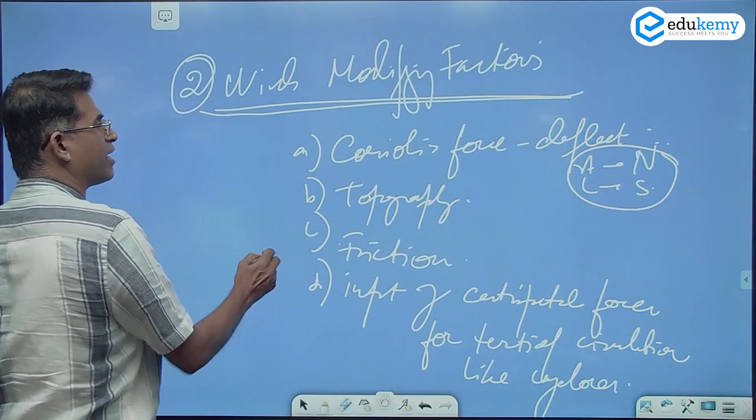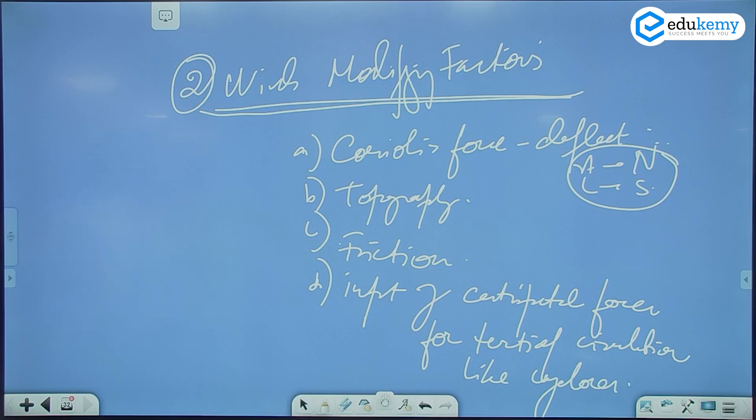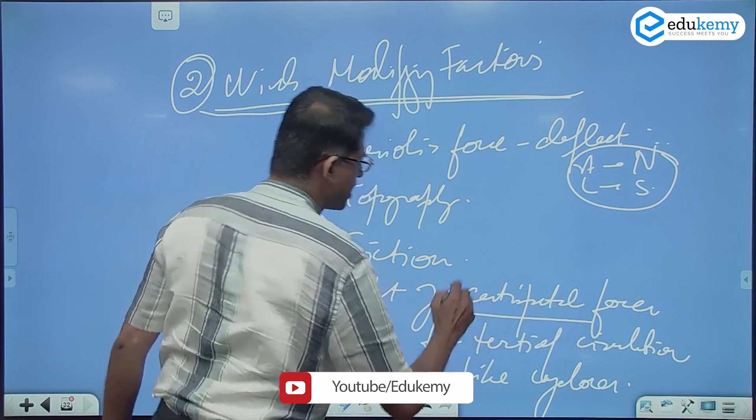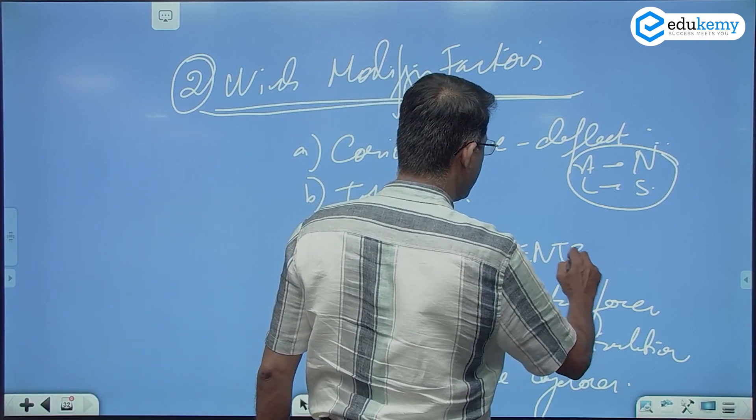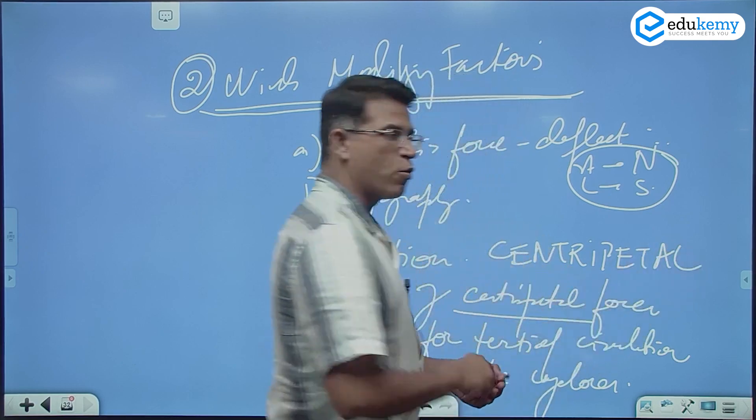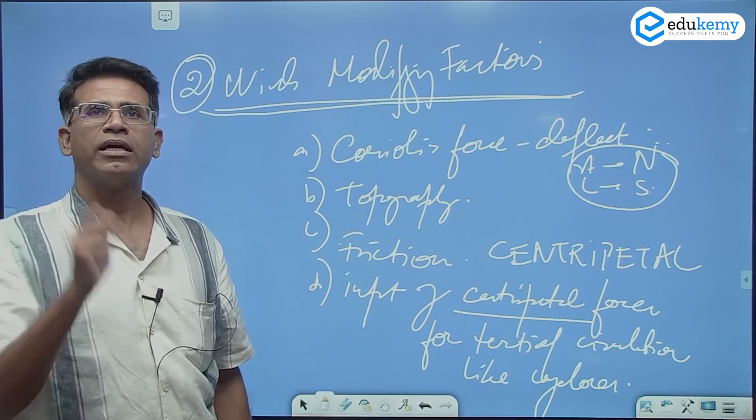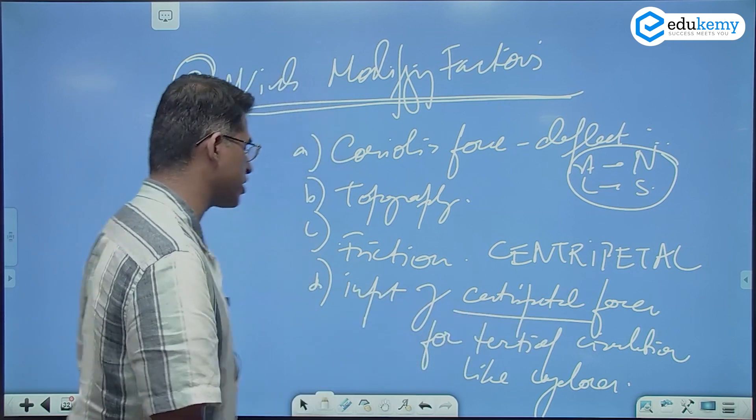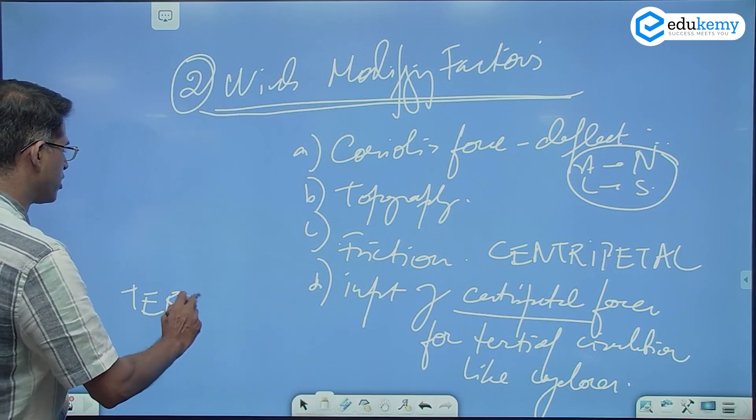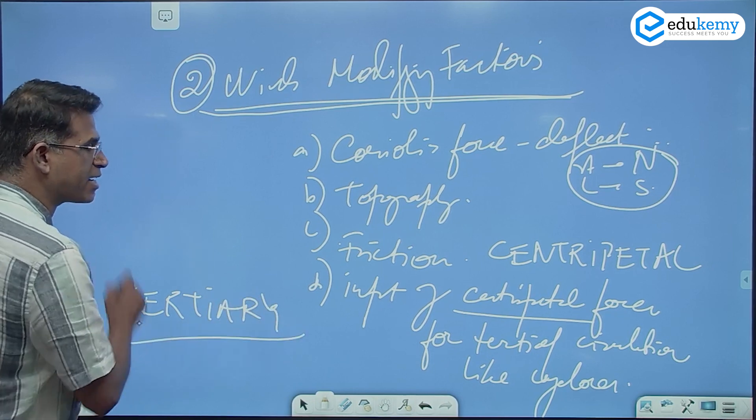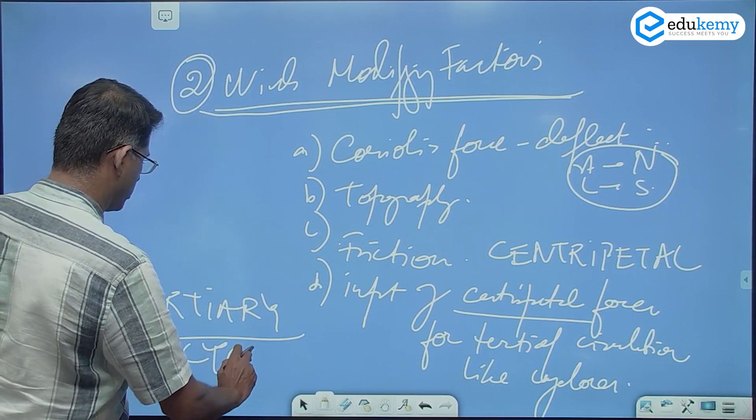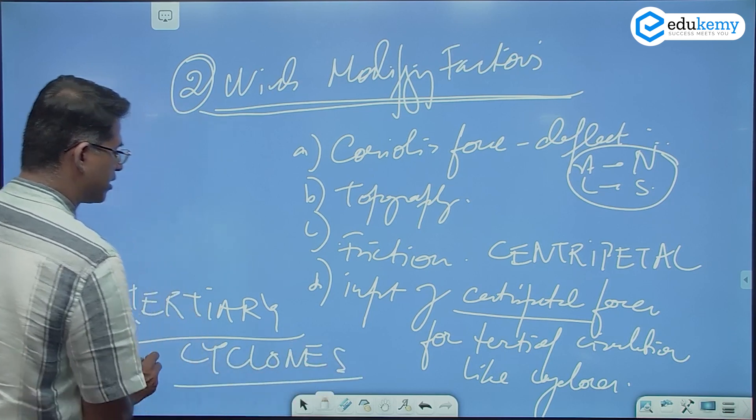What are the factors that modify? Topographies can deflect, topography can turn the winds, friction can slow down the winds. And we also have the impact of centripetal force. Centripetal force. When the wind starts to spin, okay. For tertiary circulations, for tertiary cyclones, like cyclones.